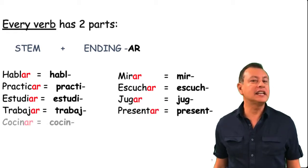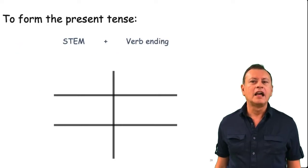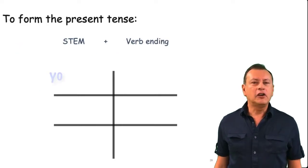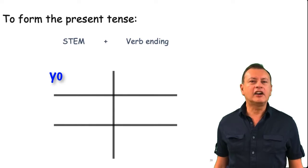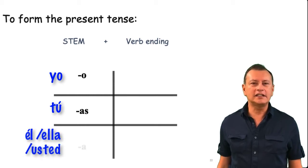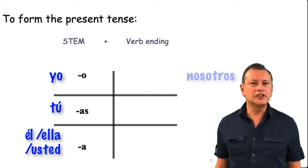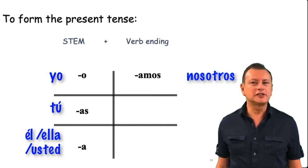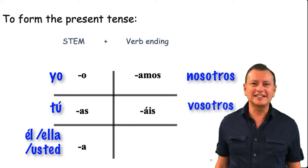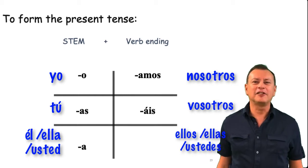Let's take a look at what endings you are going to use in Spanish for these verbs. For yo, you remove the AR and put O. Tú takes -has. Él, ella, or usted uses -A. For nosotros, -amos. Vosotros takes -áis with an accent. And for ellos, ellas, and ustedes, we use -an.